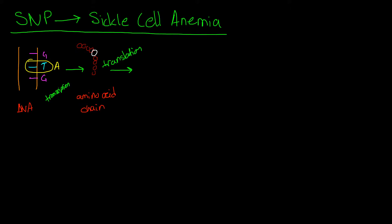For our particular protein, maybe it was supposed to look something like this, but it actually looks something like this. This is a slight change, but because it has a different shape, it will have a different function — or at least it could have a different function. In the case of sickle cell anemia, when we have this SNP where thymine replaces adenine, we get a different amino acid sequence, which results in a differently shaped protein, which results in different behavior.